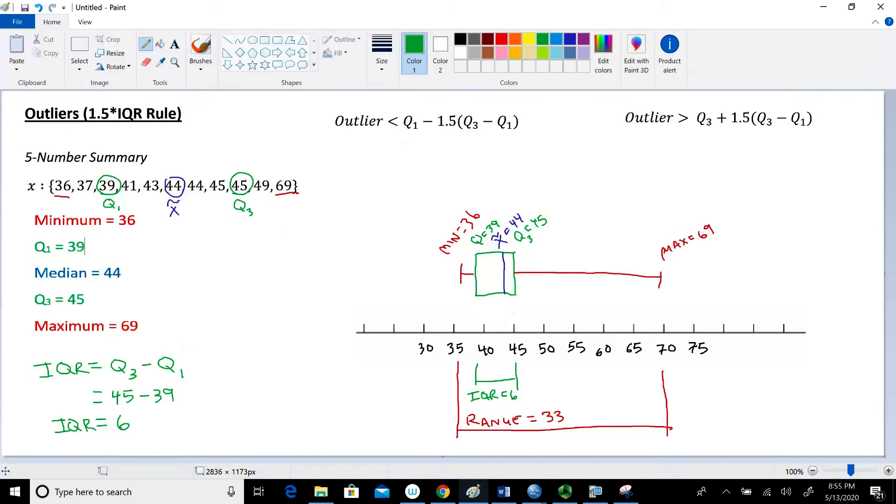In this lesson, we're going to learn how to use the 1.5 IQR rule to find outliers. So I have the two formulas over here. We have to check both the left side and the right side of a data set to determine if there's outliers.